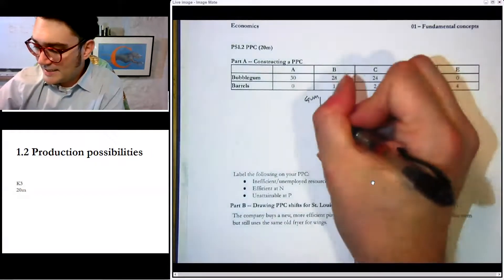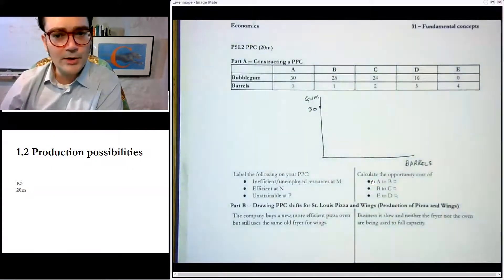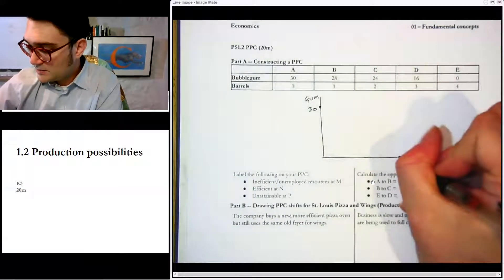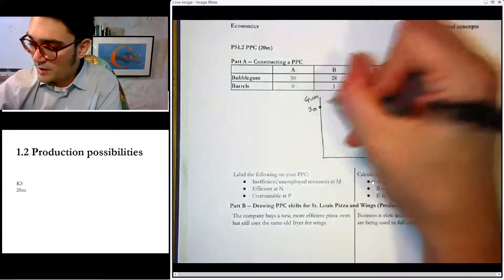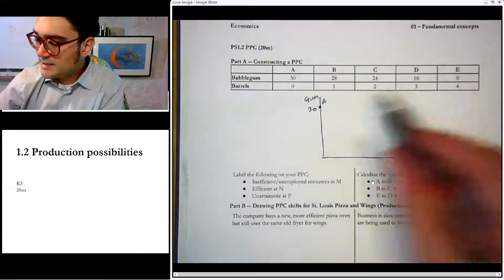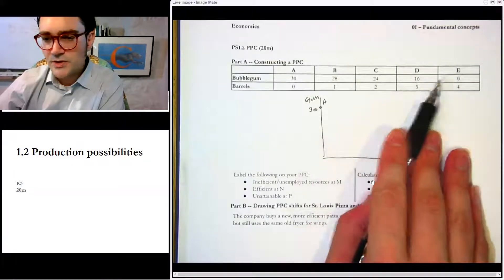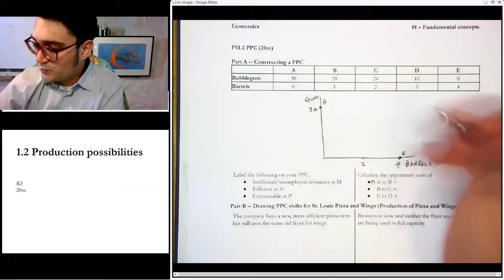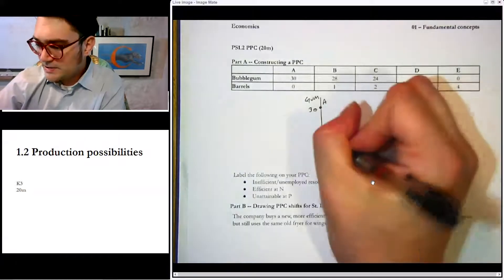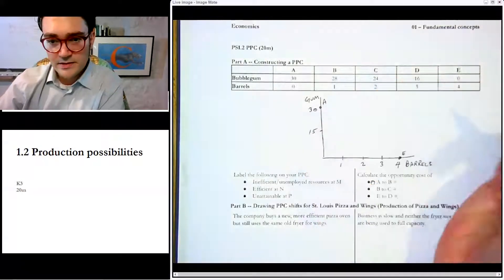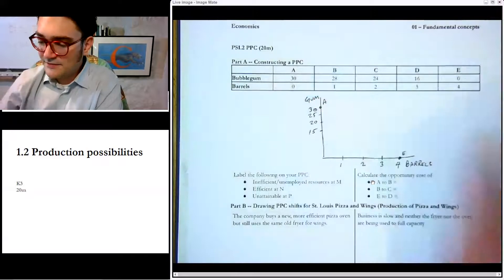So the options: we've got point A would be 30 gum and zero root beer barrels, and then point E over here would be four root beer barrels and zero gum. And then the easiest thing to do at this point is to notice that 30, 28, 24, 16, that's not a nice straight line. So maybe we divide this in half and we say 2 and 3 and 1. And let's divide this in half and say 15, and then we're going to split that one into thirds and say 20 and 25.